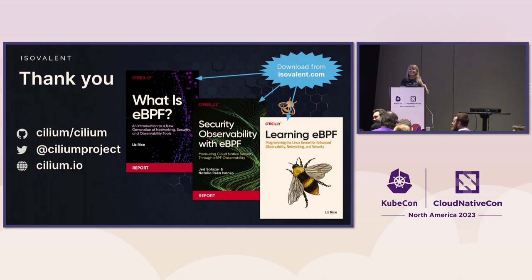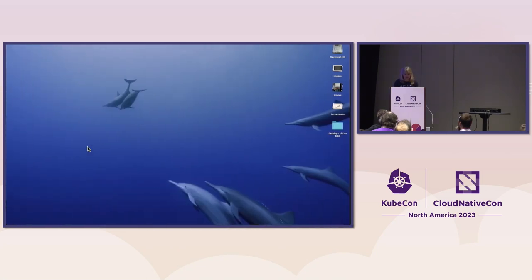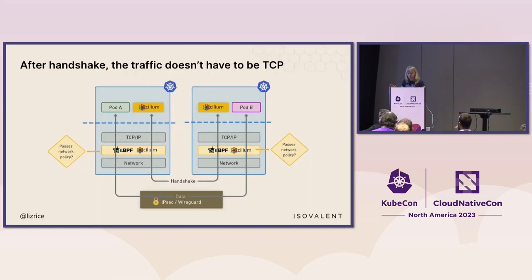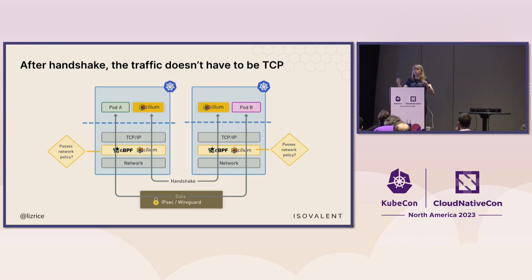Question from audience: When you showed us the authentication, was it between pod and pod, or between pod and service? Answer: The handshake is happening between two different nodes — essentially between the Cilium agents on those two different nodes. What they are asserting is that a given Cilium ID exists on that node, and that the IP address is where the other node expected it to be.